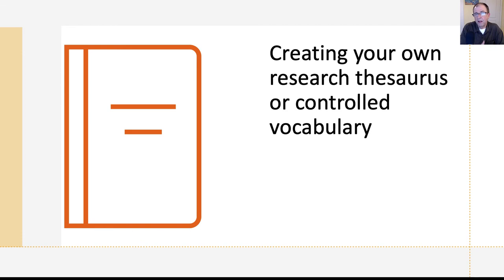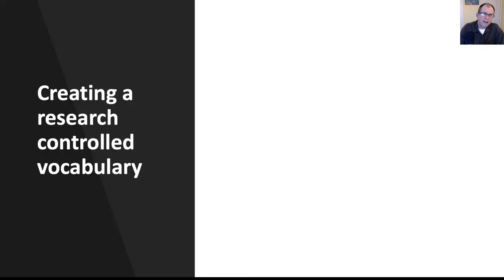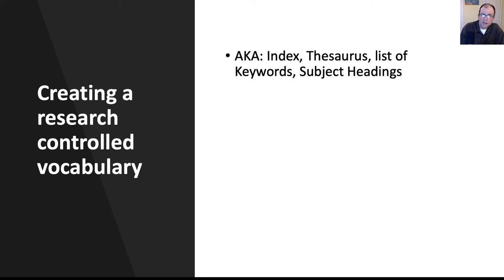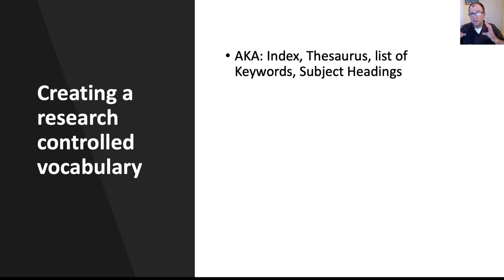Now let's move on to creating your own research thesaurus or controlled vocabulary. This is also known as an index, a thesaurus, a list of keywords, or subject headings — they're all related but mean slightly different things. An index is something found at the back of a book, or a field in a database with indexed terms. A thesaurus compiles related terms. Keywords are important terms without fixed definitions. Subject headings, in the library world, come from the Library of Congress subject headings and help narrow you into a specific area of research.